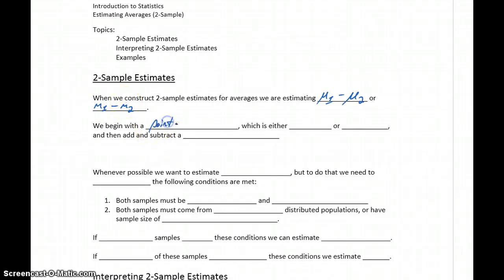For these estimates, we still begin with a point estimate, which is either going to be x̄1 bar minus x̄2 bar, meaning our point estimate is the difference between our two sample means, or our point estimate is the difference between our two sample medians, m1 bar minus m2 bar.